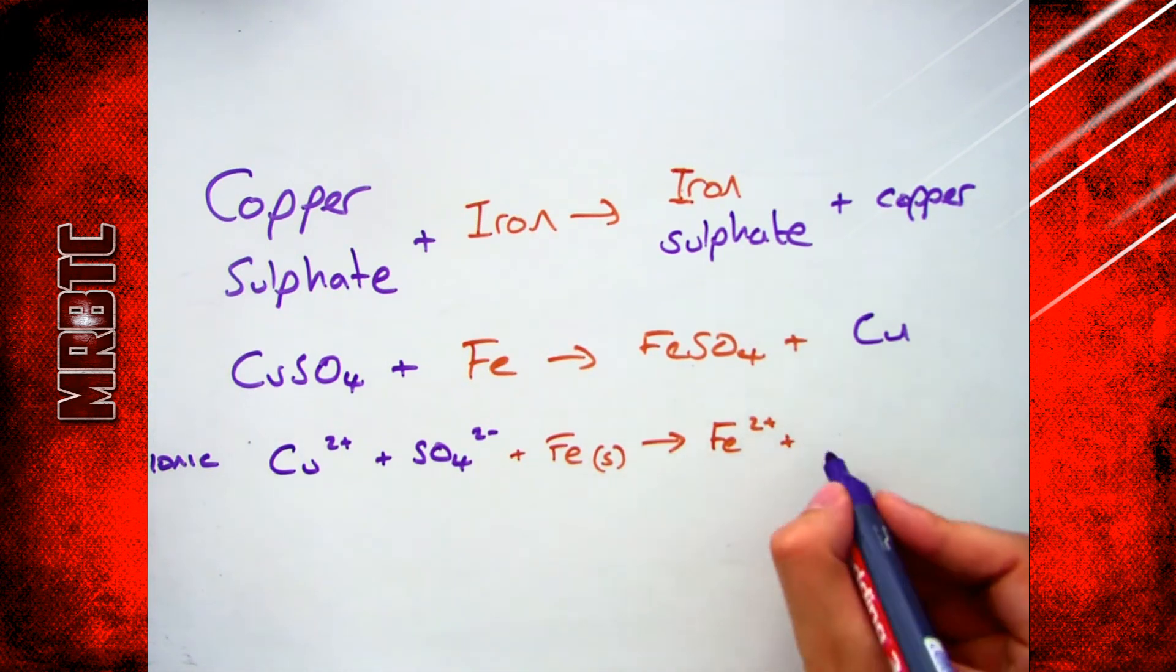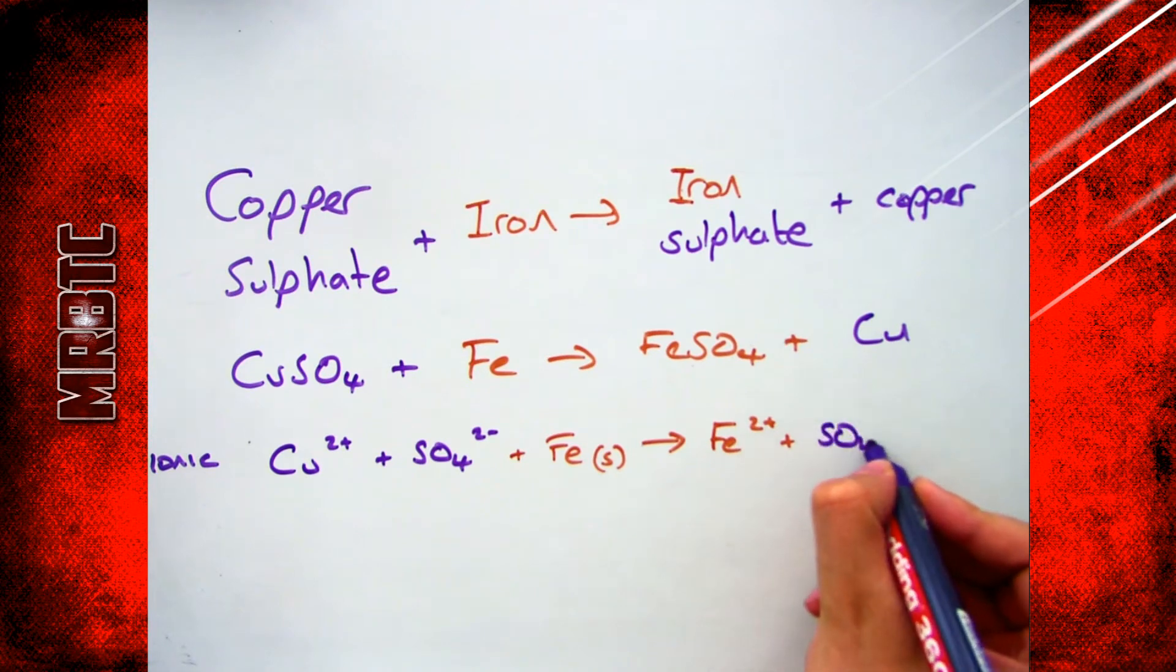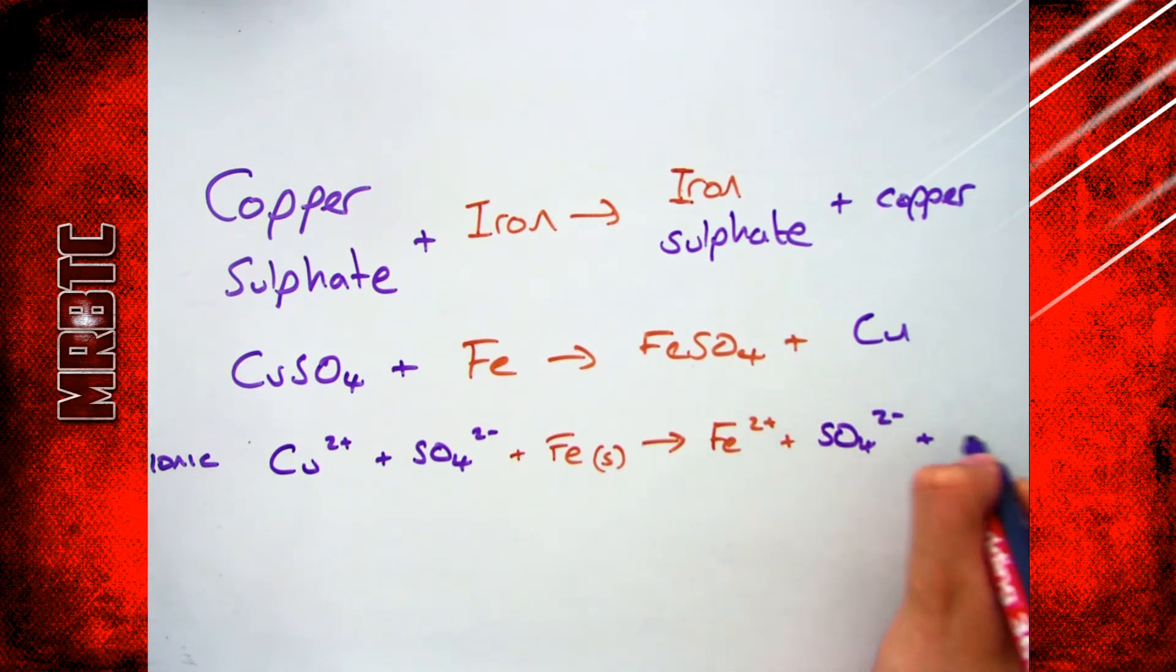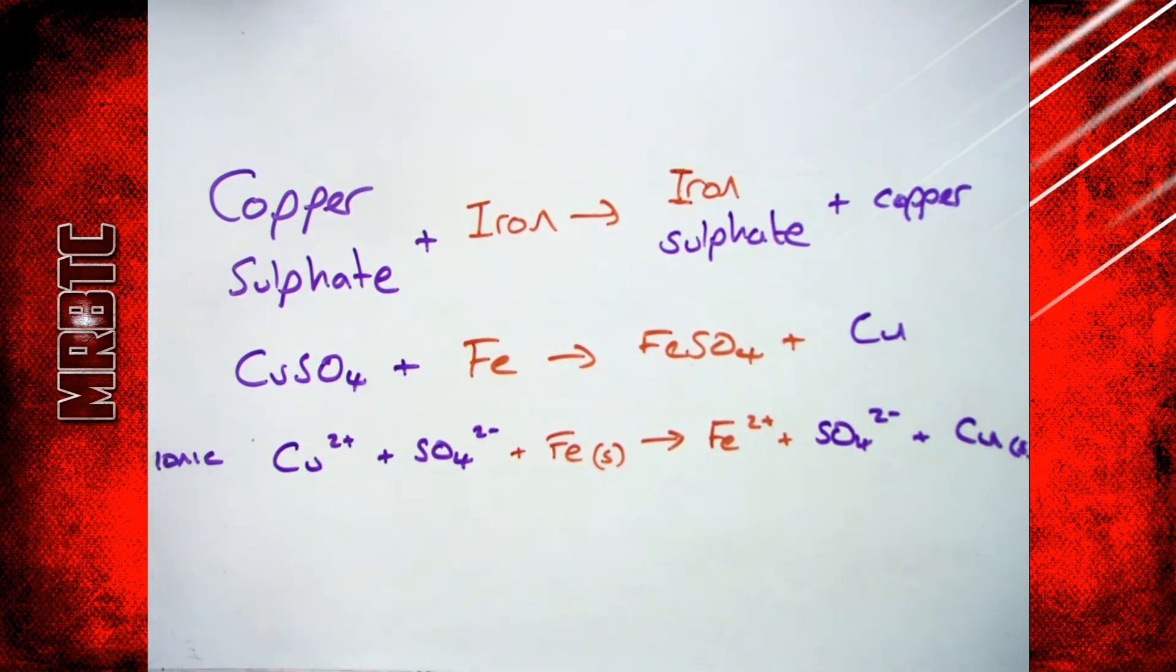Iron is a solid therefore it stays as a solid. When it becomes aqueous, goes to FeSO4, it then changes into an ion so it becomes Fe2+. Again we know that because I've got my SO4 2- ion, and now copper has become a solid so I don't put a charge on that.